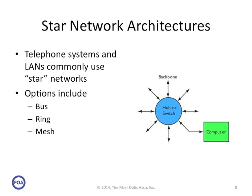We talk most about star networks because they're the most common. It's the way telephone systems and most LANs commonly in use work, where there is a central hub or switch and computers, phones, wireless access points, or whatever connect into the network. But there are other types of networks that have been used and are still in use, including the bus network, a ring network, and a mesh network. So let's look at them.